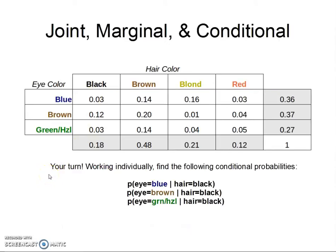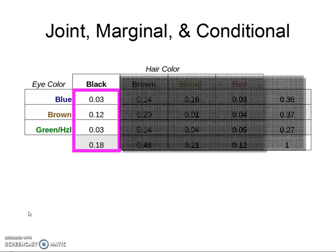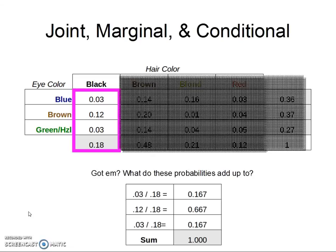Okay, great. So your turn. Find the following conditional probabilities. Did you find them? In each case, black hair is given, so we know we're limited to this first column. Boom. And they add up to one, just like you'd expect.